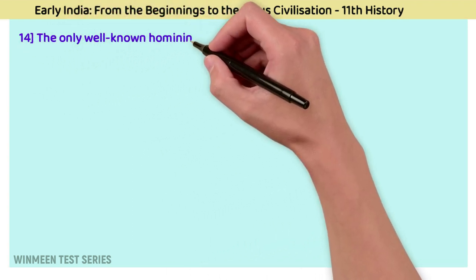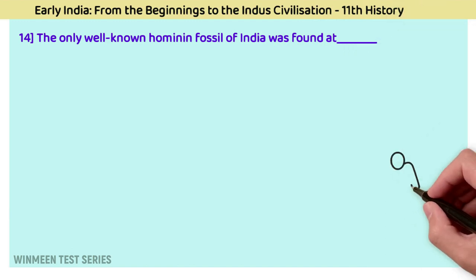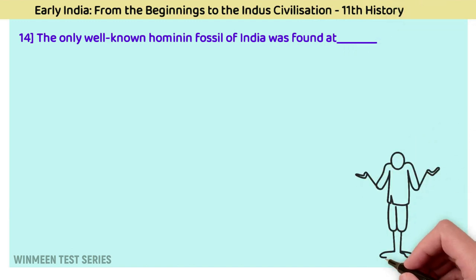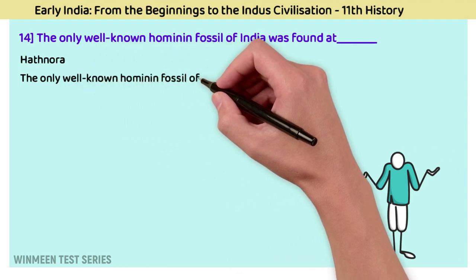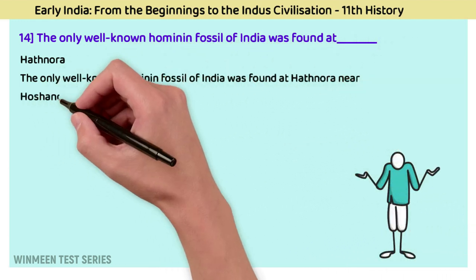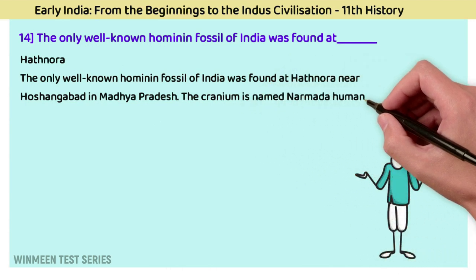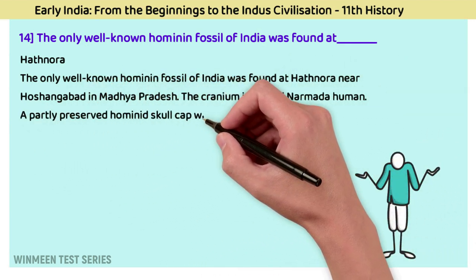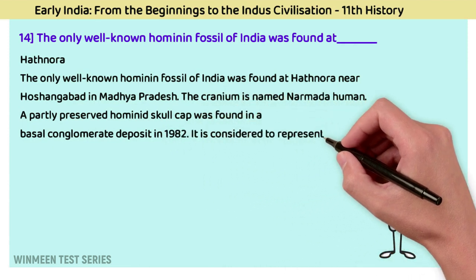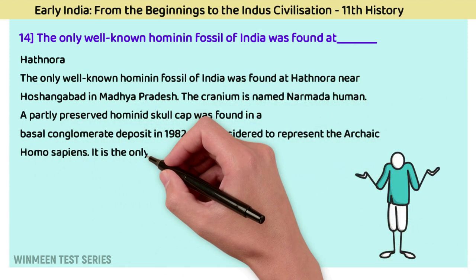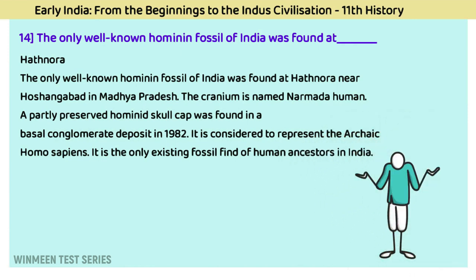Question 14: The only well-known hominin fossil of India was found at? The answer is Hathnora. The only well-known hominin fossil of India was found at Hathnora, near Hoshangabad in Madhya Pradesh. The cranium is named 'Narmada Man.' A partly preserved hominin skullcap was found in a basal conglomerate deposit in 1982, considered to represent archaic Homo sapiens, and is the only existing fossil find of human ancestors in India.